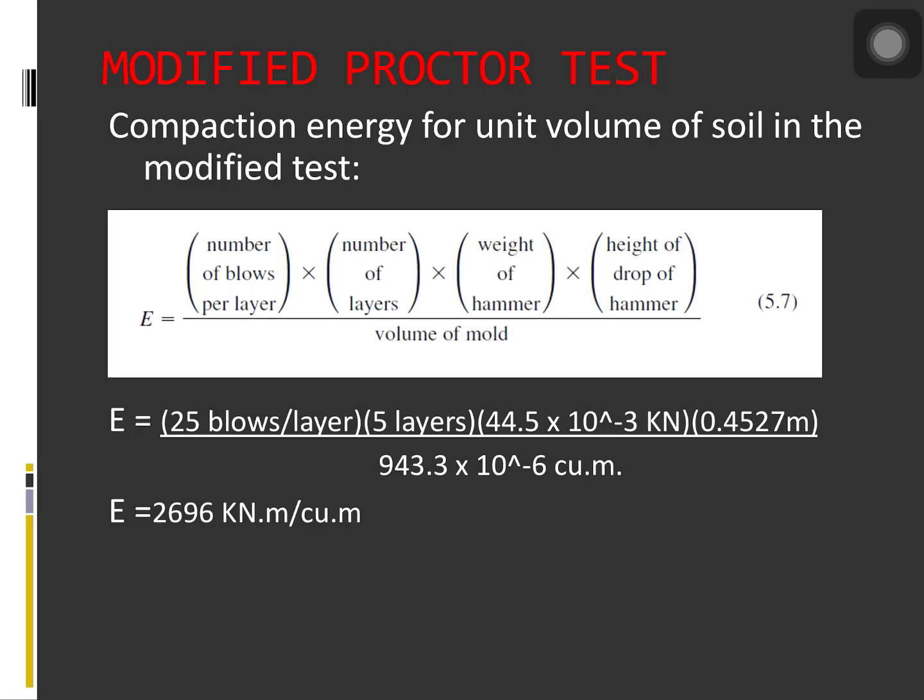If we use the formula for the compaction energy that was discussed a while ago, which is equal to number of blows per layer, number of layers, weight of hammer, and height of drop, all over volume of mold, using the formula to get the compaction energy for the modified proctor test, the number of blows per layer is not changed, but the number of layers was increased to five. And the weight of hammer will be much heavier, which is 44.5 Newtons, and the height of drop of the hammer will be 0.4527 meter. But the volume of the mold remains unchanged, which is equal to the compaction energy equal to 2696 kilonewton meter per cubic meter.